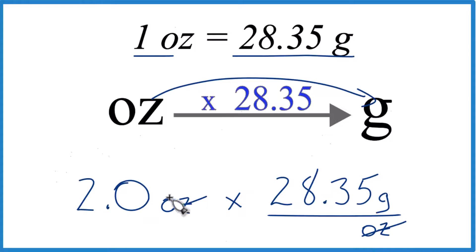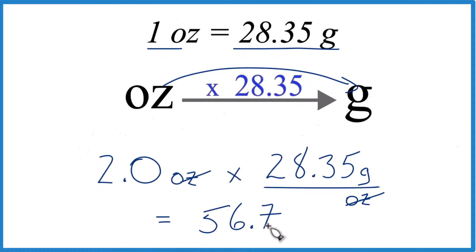When we multiply 2.0 times 28.35, or just 2 times 28.35, that equals 56.7 grams. That's the only thing that's left. That's what we're looking for here. So 2.0 ounces equals 56.7 grams.